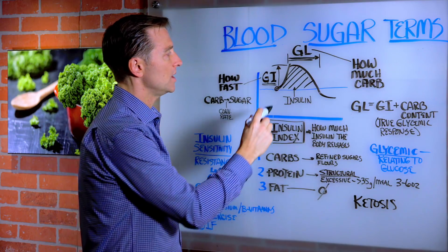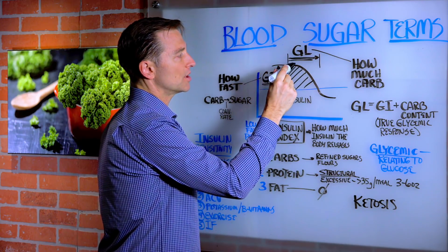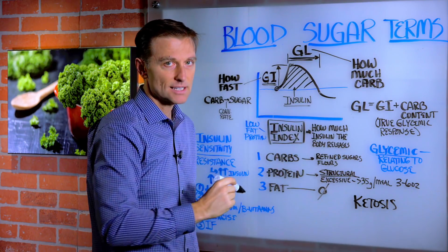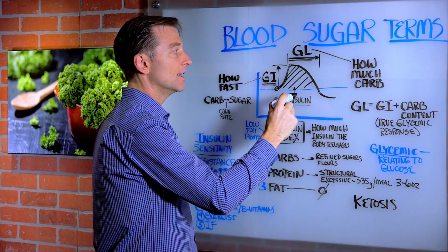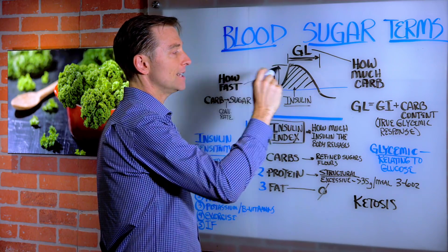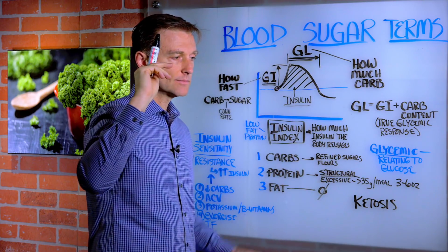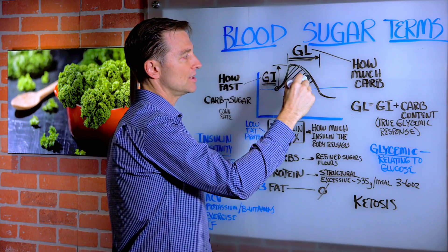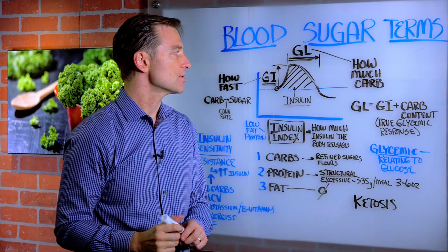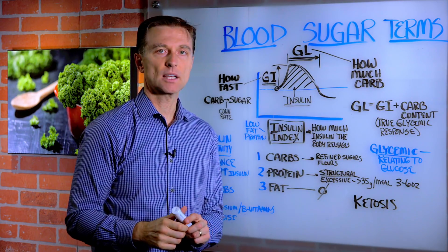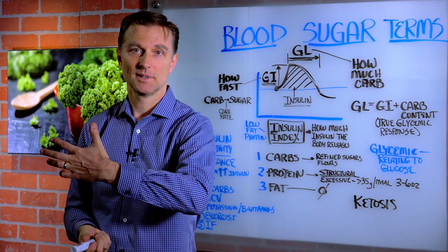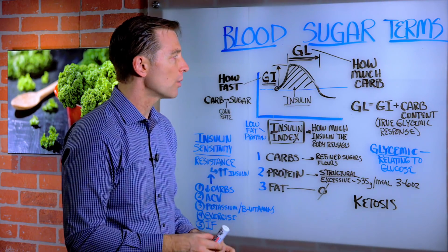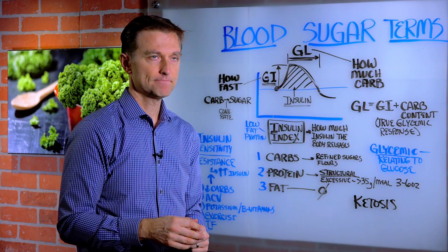When you do spike your sugars, a hormone called insulin comes in. Insulin's main purpose is to drop the sugar — it does not want the sugar too high. So as soon as you spike it, insulin comes in and removes it from the blood. Insulin is a hormone that lowers the sugar.